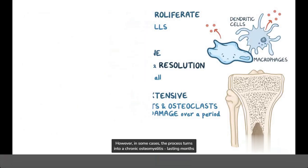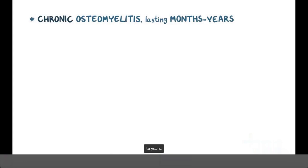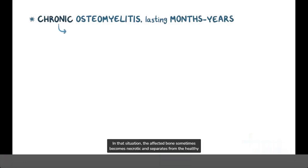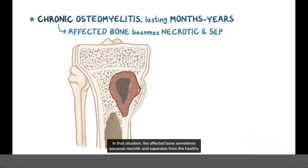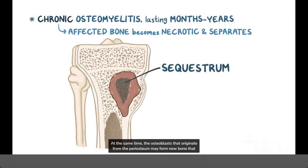However, in some cases the process turns into chronic osteomyelitis, lasting months to years. In that situation, the affected bone sometimes becomes necrotic and separates from the healthy part of the bone — that's called a sequestrum. At the same time, the osteoblasts that originate from the periosteum may form new bone that wraps the sequestrum in place, and this is called an involucrum.